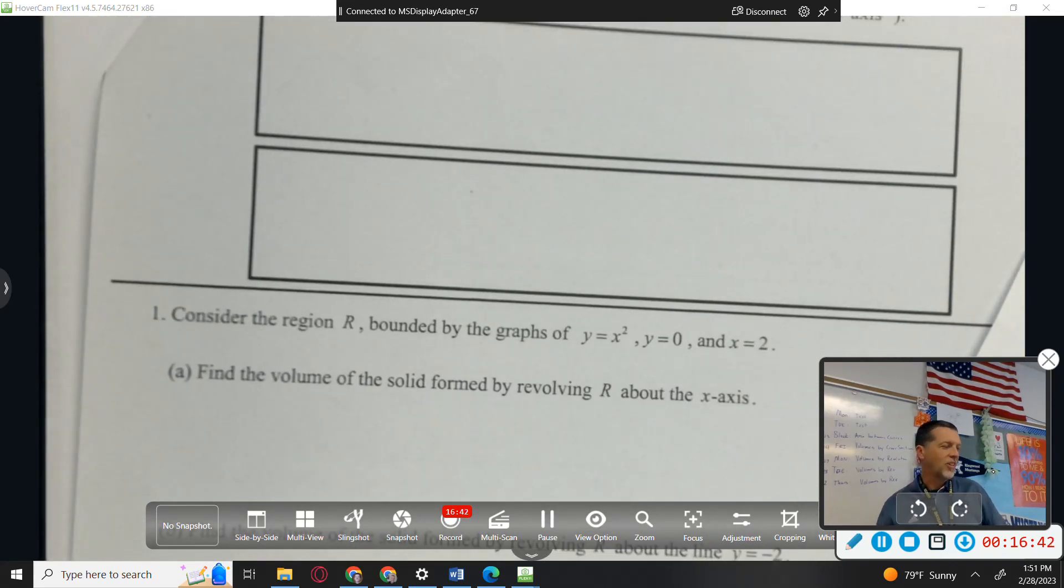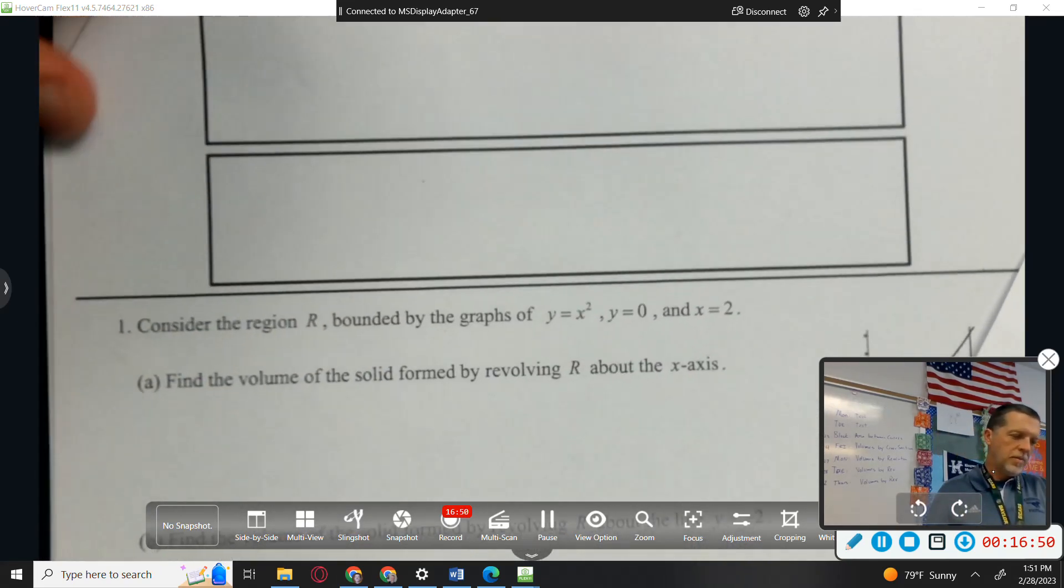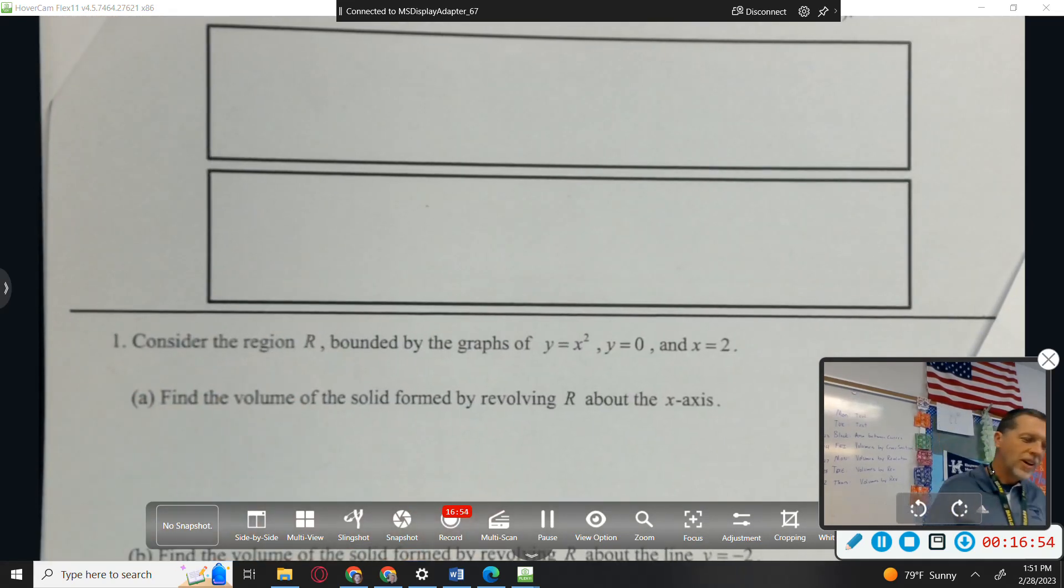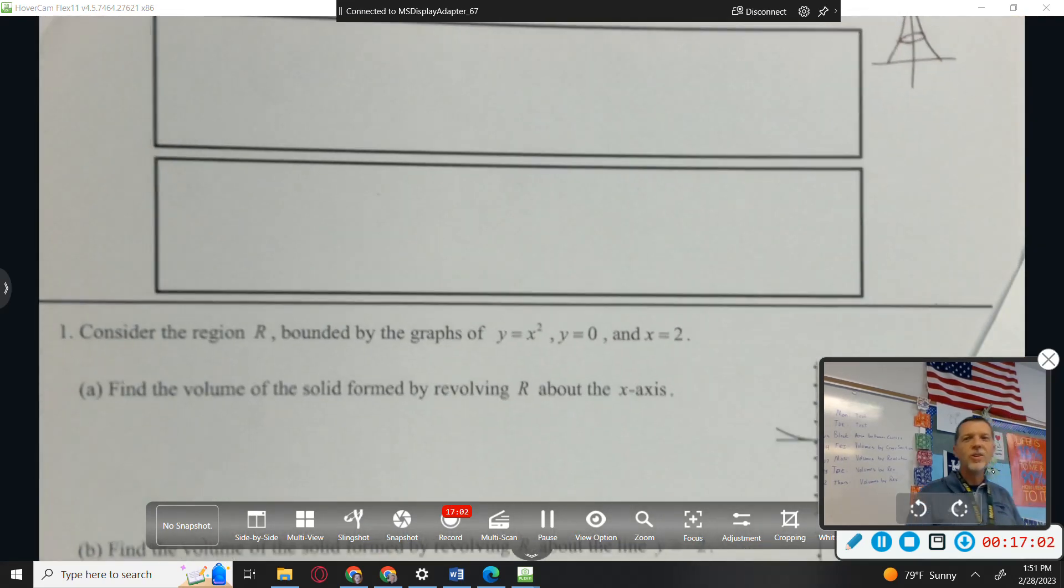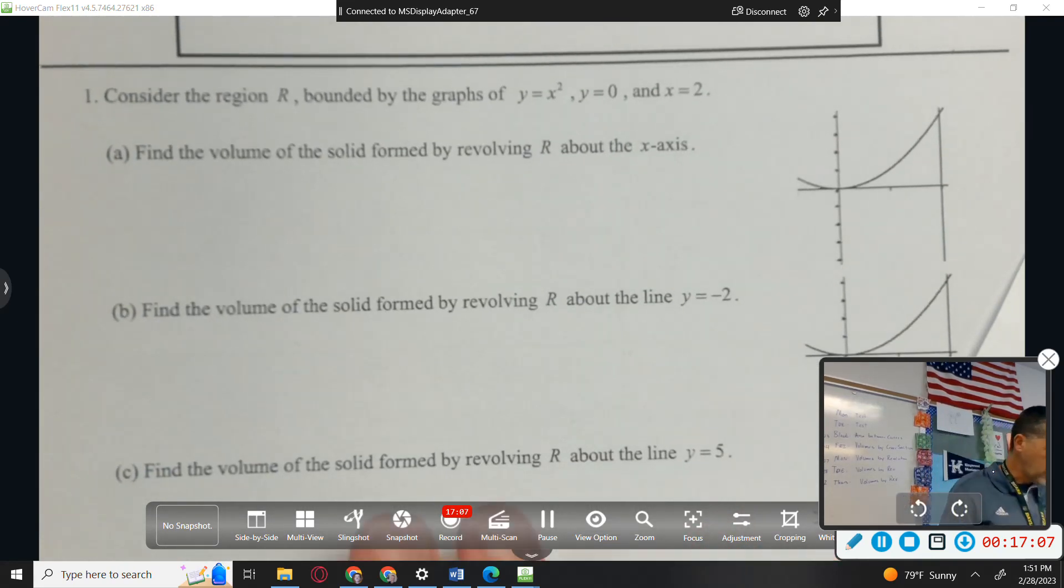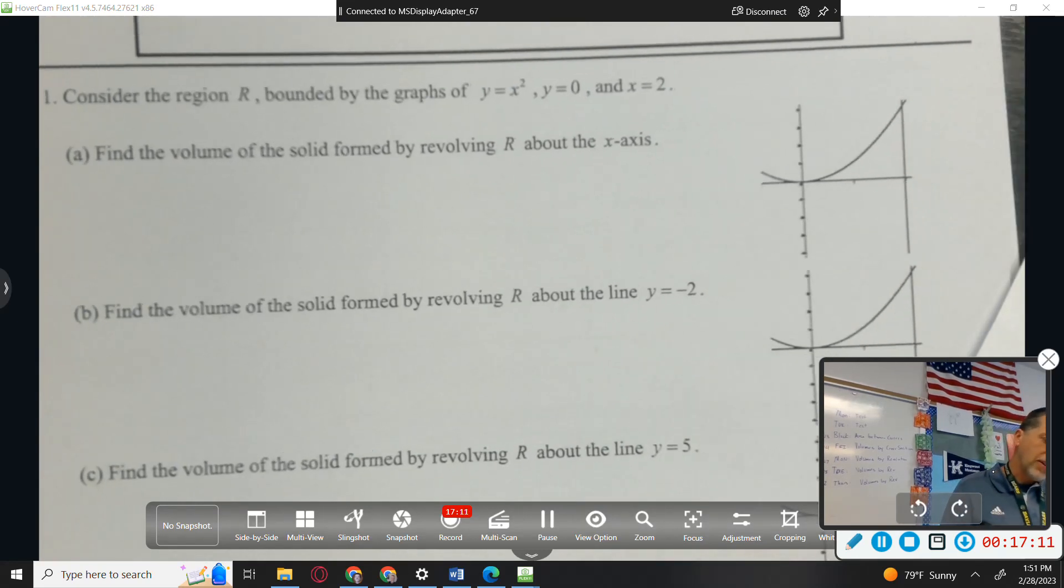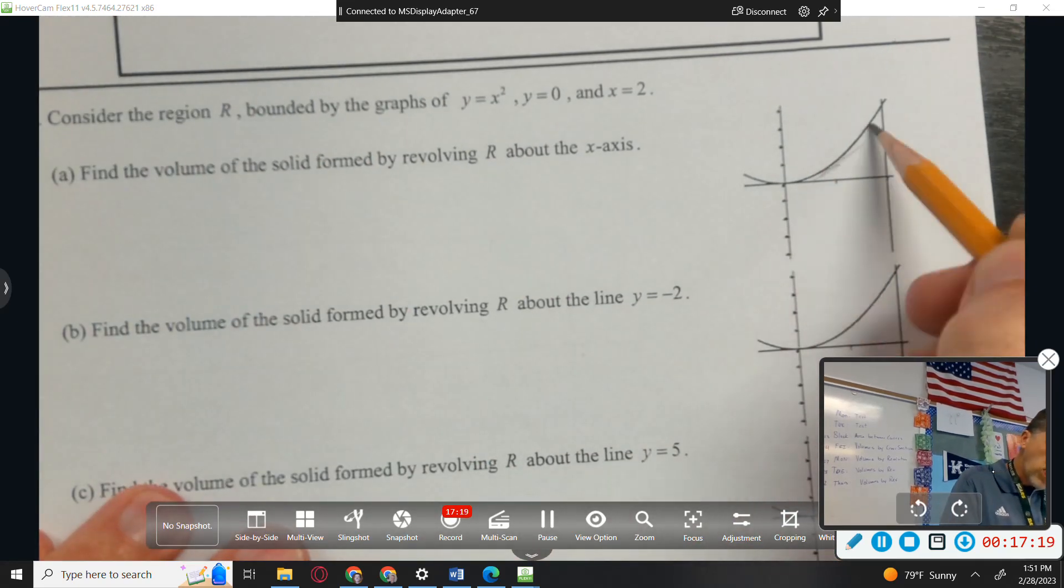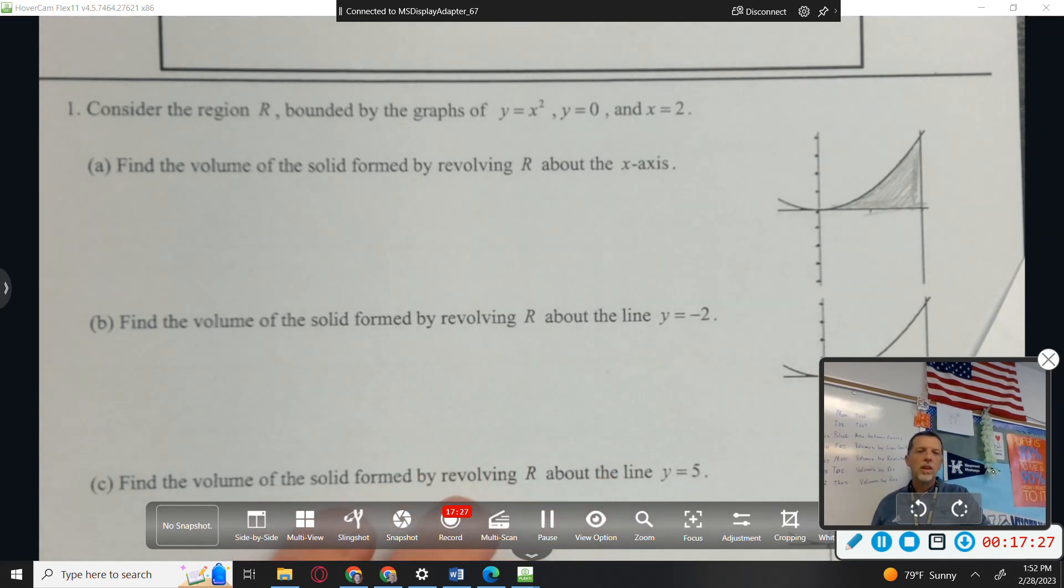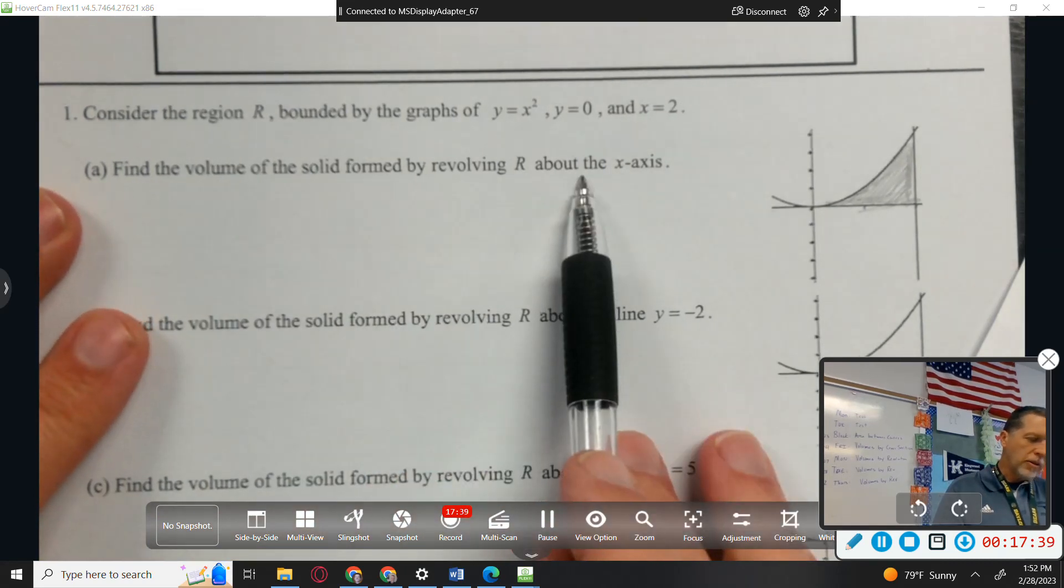Let's pass on the next one. We'll save that for tomorrow because that's going to be revolved around the y-axis. Number one, see if we can get through the first two of these. Consider the region R bounded by the graph of y equals x squared, y equals 0, x equals 2. So we've got it all graphed out for us. There's my region R. And you can see for A through E, it's all the same region. We're just going to rotate it different places or different ways. Find the volume of the solid formed by revolving about the x-axis.